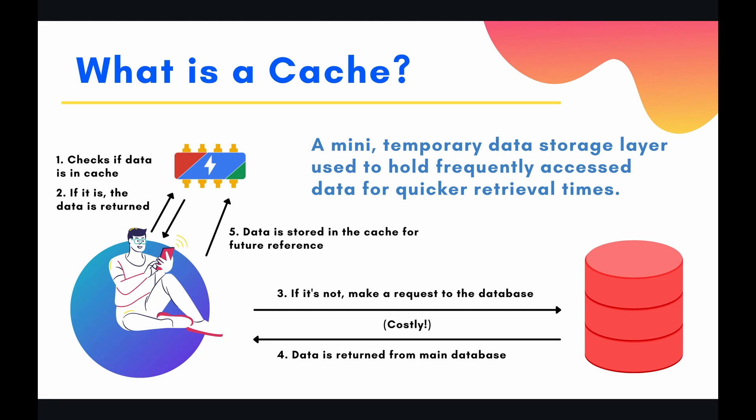Now, this operation is often considered very costly and inefficient. The database could potentially live thousands of miles away from you, so sending the request from your mobile client all the way to the database could be a very long journey. But more importantly, the database is huge — for New York Times, they have a very large database — and making that query is probably going to take some time, especially if you have a very large query. It takes time just to retrieve the data you want and then send it all the way back to the user.